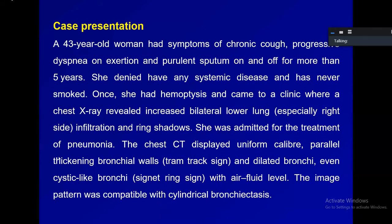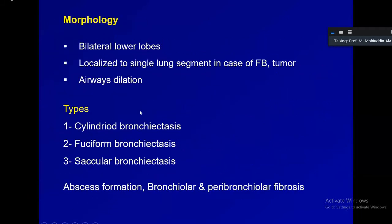The image pattern was compatible with cylindrical bronchiectasis. There are various categories of bronchiectasis depending on the shape of the dilated bronchus: cylindrical, fusiform, and saccular. Morphologically, bronchiectasis usually involves bilateral lower lobes unless caused by a foreign body or tumor, which is a unilateral phenomenon. Complications include abscess formation, bronchial and peribronchial fibrosis — at which point the condition becomes stabilized — but it is an irreversible process.